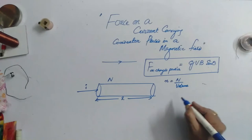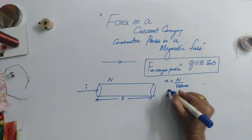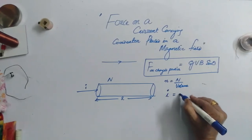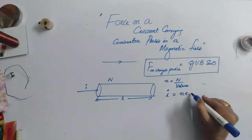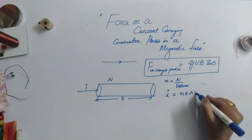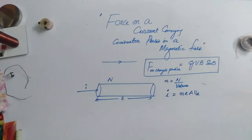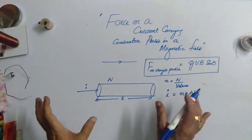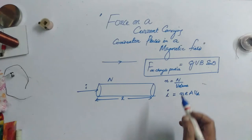We also have derived I is equal to N, E, A, VD, this drift velocity. These facts we are going to use.